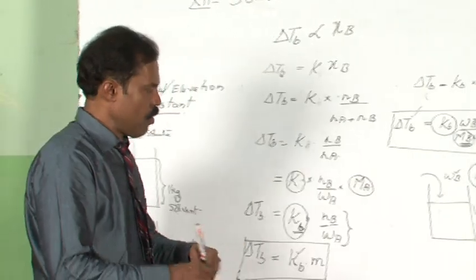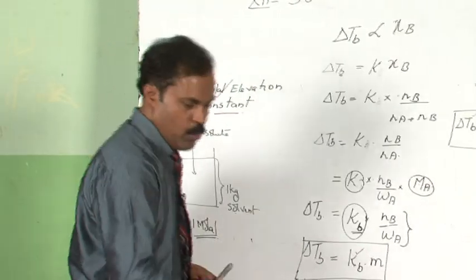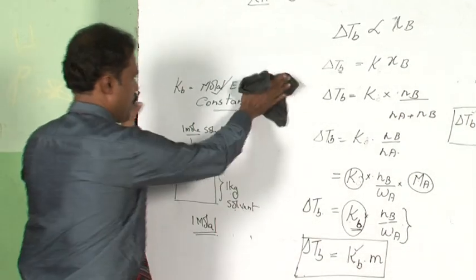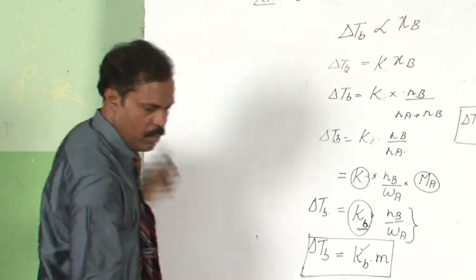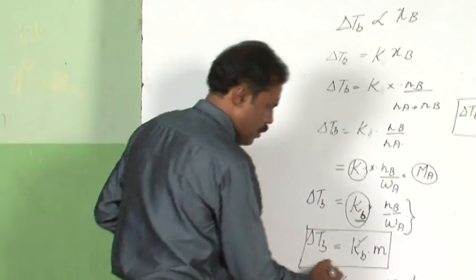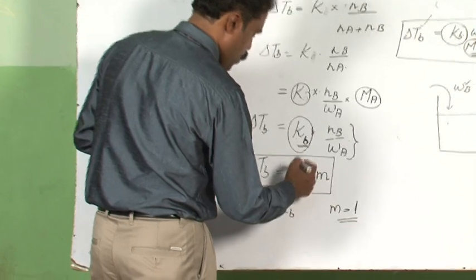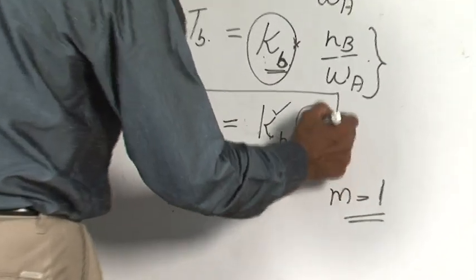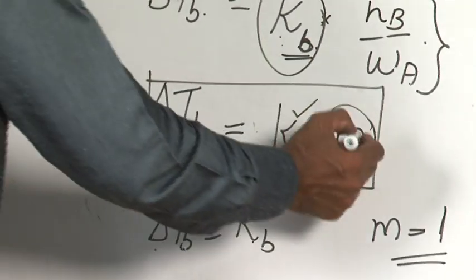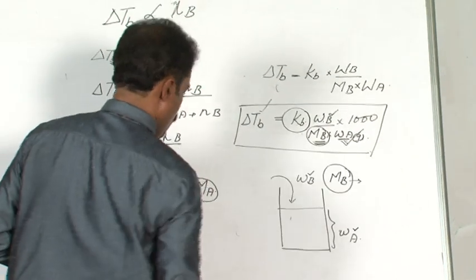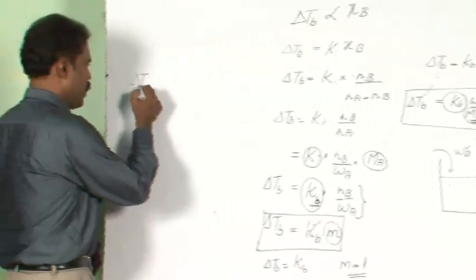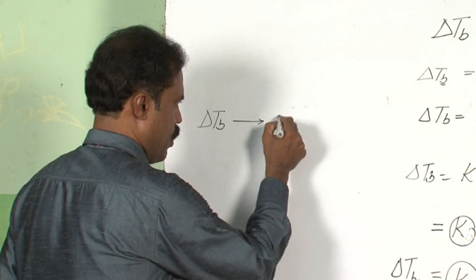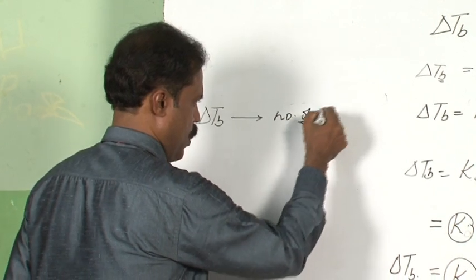Let us discuss one more important piece of information. If you see the formula which we have derived properly, you can see that delta Tb is proportional to the molality. Molality is the number of moles per weight of solvent in kilograms. Can we understand delta Tb as something which depends on the number of particles?